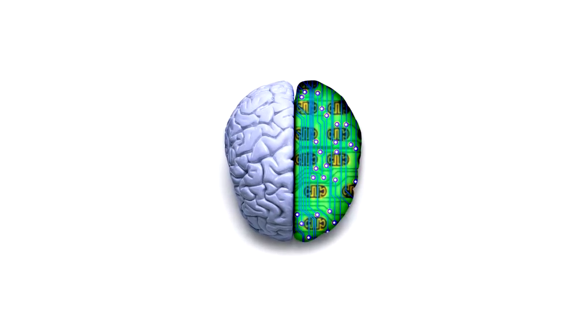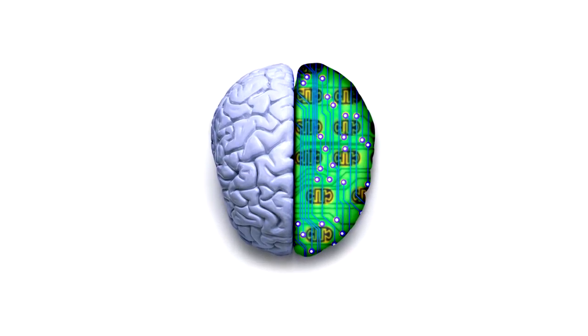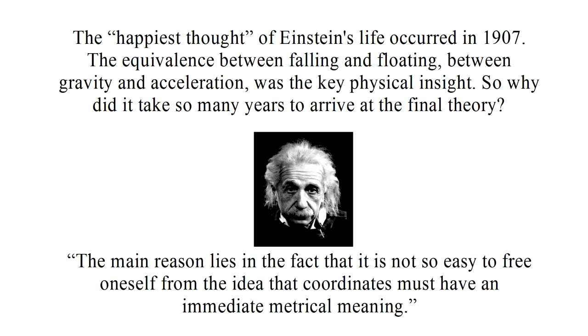As we examine various predictions, we're going to come face to face with one of the most, at least to me, unsettling and brain-frying aspects of the theory. Recall from video four, the happiest thought of Einstein's life, which occurred in 1907. The equivalence between falling and floating, likewise between gravity and acceleration, was his key physical insight. So why did it take Einstein so many more years to work out the complete theory? One reason, as we've seen in several of these videos, was the complexity of the math. But according to Einstein, the main reason lies in the fact that it is not so easy to free oneself from the idea that coordinates must have an immediate metrical meaning.